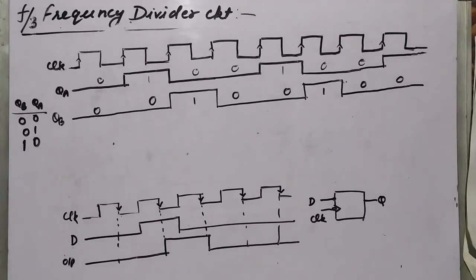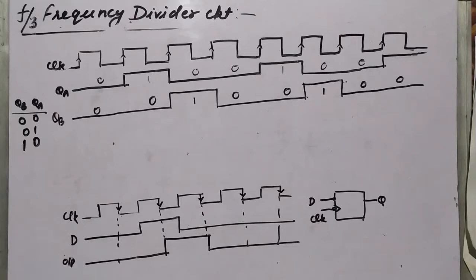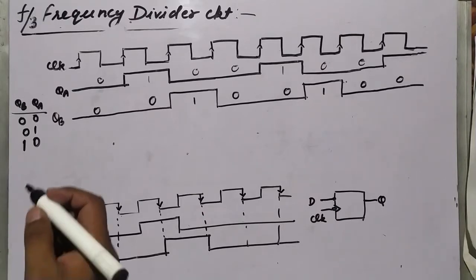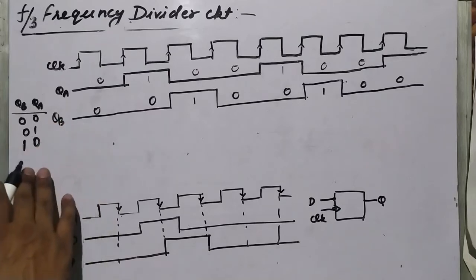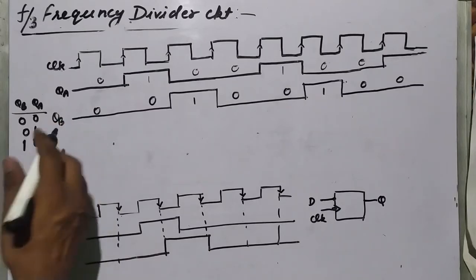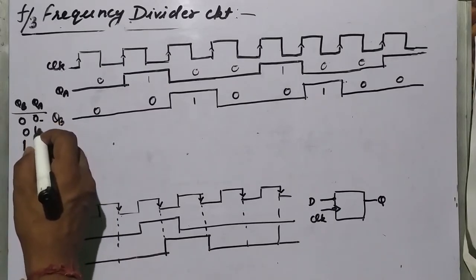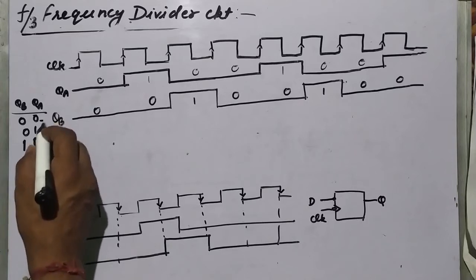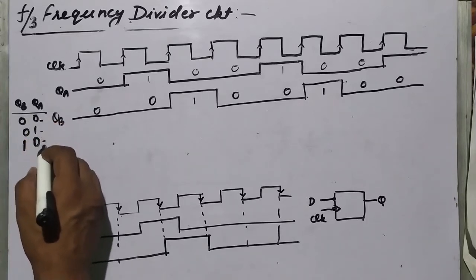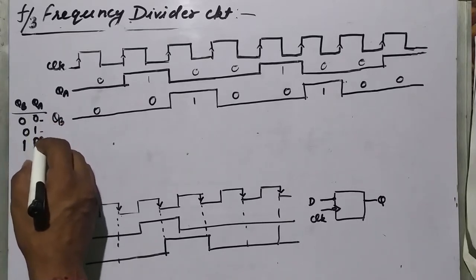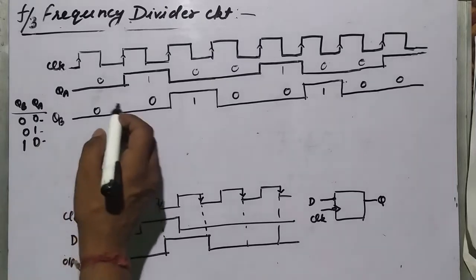Hello everyone, today we will discuss the F-by-3 frequency divider circuit. This circuit will divide the clock frequency by 3. We can achieve this using a mod-3 counter. A mod-3 counter counts 3 states: 0, 1, and 2, then again 0, 1, and 2.